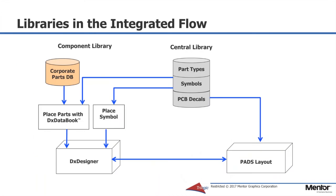In the integrated flow, there's one central library and that library defines both the symbol and the footprint. It also defines under a part number the connectivity between the symbol and the footprint. That central library makes it easier to maintain consistency between your schematics, your footprints, and your part definitions. A symbol or part placed on the design from the central library references not only the symbol but the footprint and the connectivity information as well. You can also place symbols independently and define the connectivity information at a later time by selecting a part number. We also use a corporate part database, and we recommend the concept of a separate corporate parts database rather than storing component information in a CAD library where it is much more difficult to maintain.